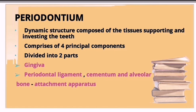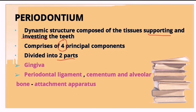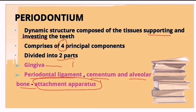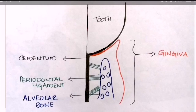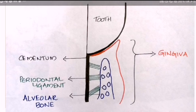Before getting into gingiva, we have to first understand what is periodontium. Periodontium is a dynamic structure composed of tissues supporting and investing the teeth. It comprises four principal components divided into two parts: gingiva, and the attachment apparatus which includes the periodontal ligament, cementum, and alveolar bone.